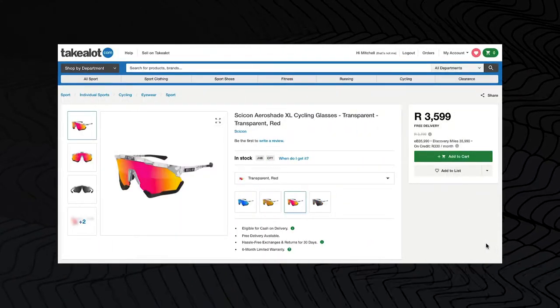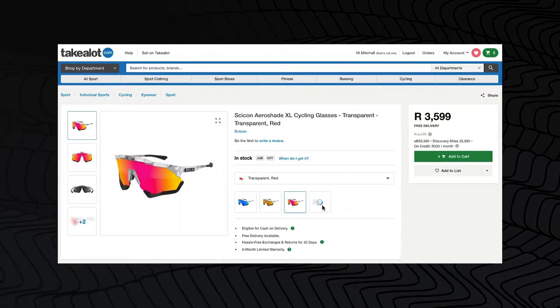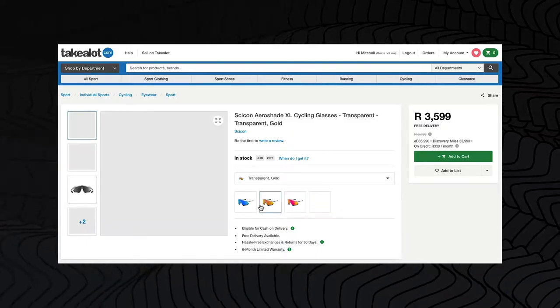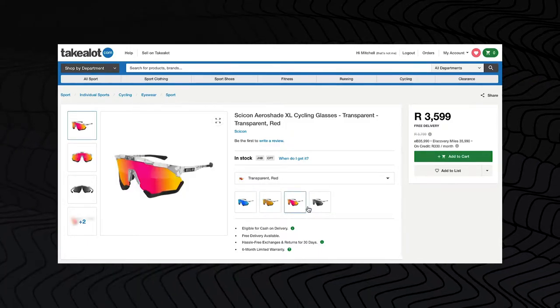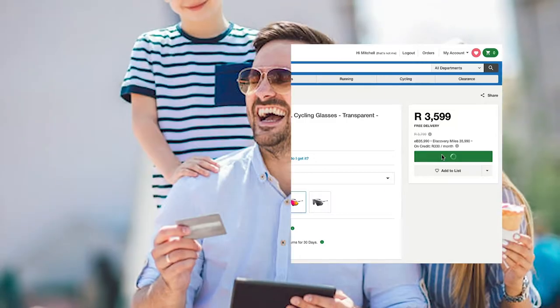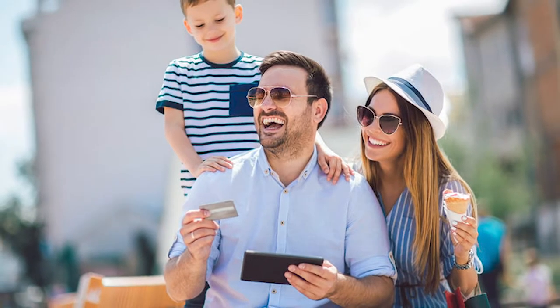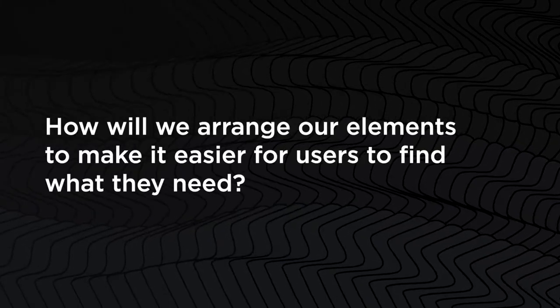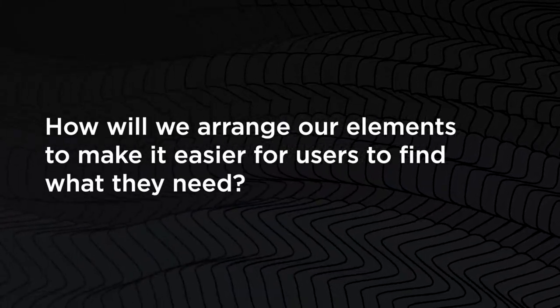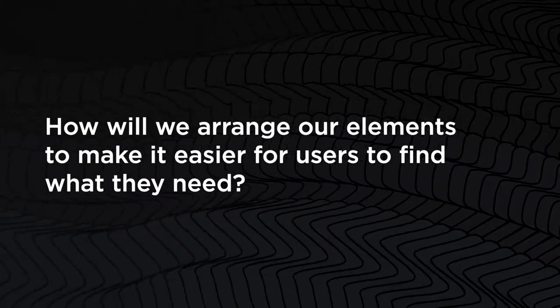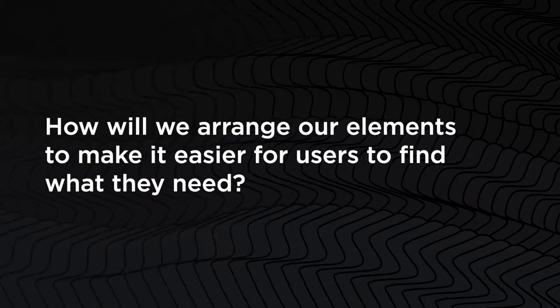At the skeleton layer, we optimize the arrangement of these elements for maximum effects and efficiency so that you recall the brand and any important elements like the one that lets you put in your credit card details. Important questions to ask at this layer include interface design questions, such as how will we arrange elements to make it easier for users to find what they need?